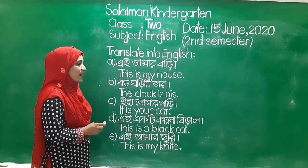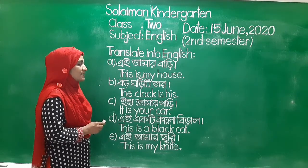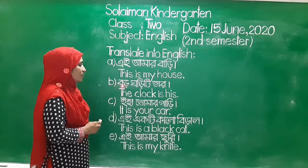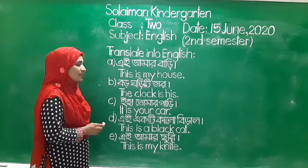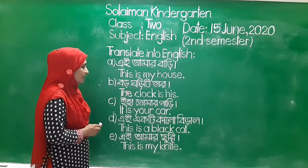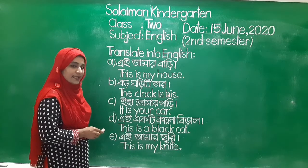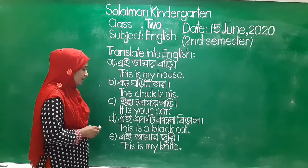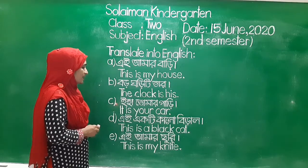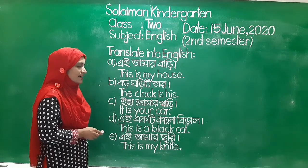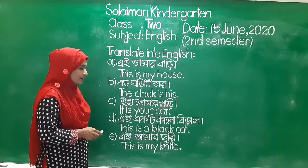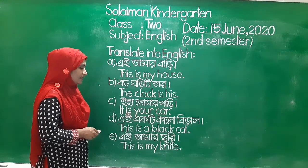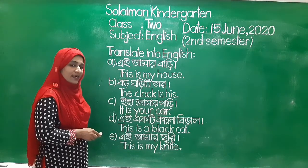Number A: This is my house. This is my house. Number B: The clock is his. The clock is his. Number C: It is your car. It is your car.